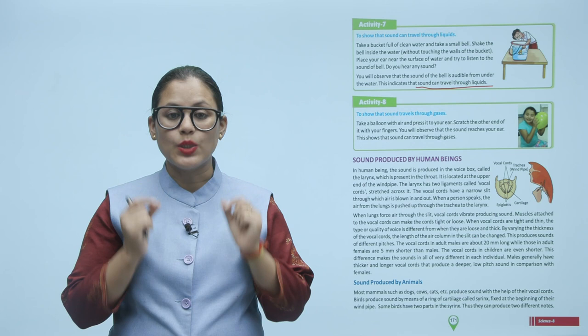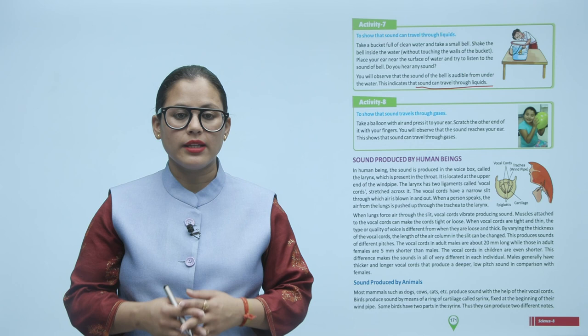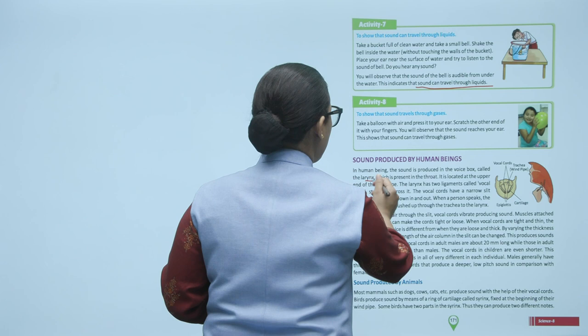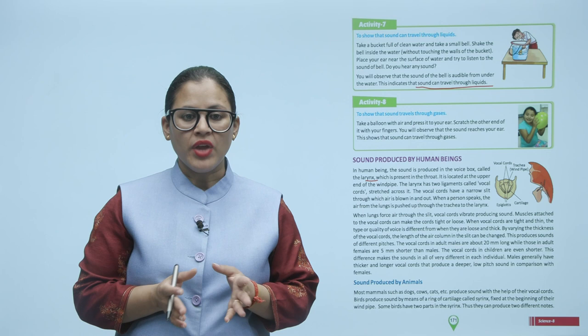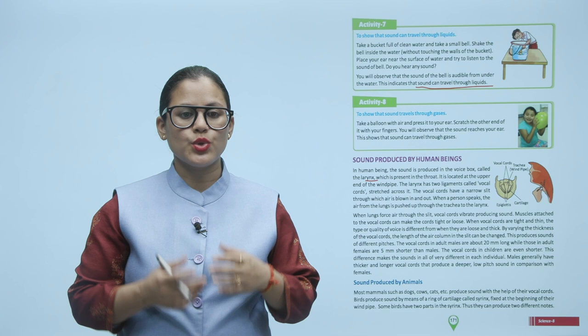Sound produced by human beings. In human beings, sound is produced in the voice box called the larynx, which is present in the throat at the upper end of the windpipe. The larynx has two ligaments called vocal cords stretched across it. The vocal cords have a narrow slit through which air is blown in and out. When a person speaks, the air from the lungs is pushed up through the trachea to the larynx. When the lungs force air through the slit, the vocal cords vibrate, producing sound.